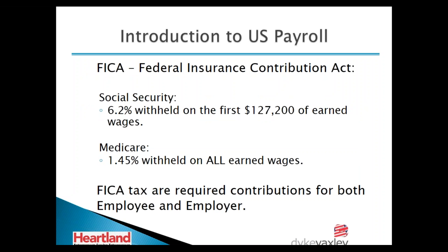The FICA tax — Federal Insurance Contributions Act — has two parts. Social Security is 6.2% withheld on the first $127,200 earned by the employee. Medicare is 1.45% withheld on all earned wages with no wage cap — so even if you earn $5 million, 1.45% is withheld on all of it. As the employer, you withhold both from the employee's check and match them — up to the wage-based limit for Social Security, and on all wages for Medicare.